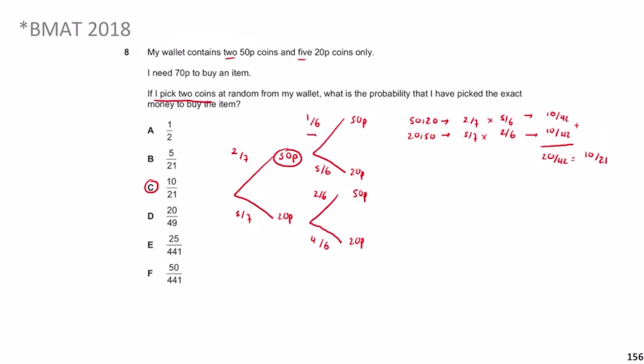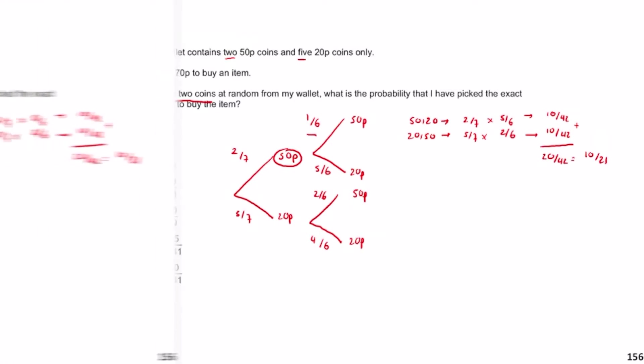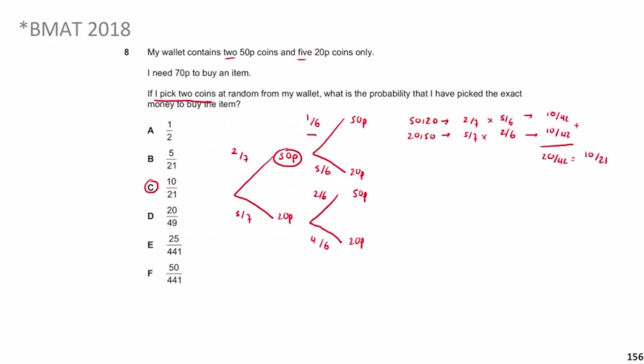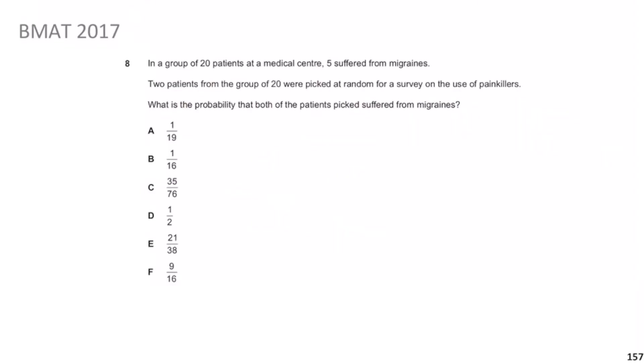I really hope that made sense. Now we move on to BMAT 2017 Question 8. The key point from BMAT 2018 was that when an item is not replaced, the probabilities change on the second pick — and we'll see that again now.